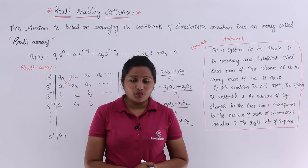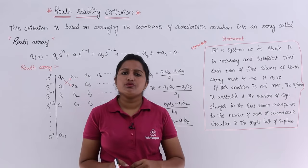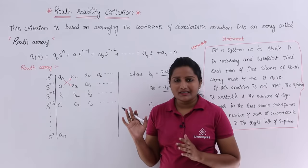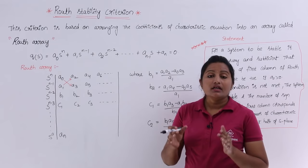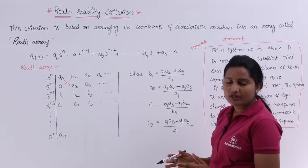In this video we are going to discuss Routh Stability Criterion, which is used to calculate the stability of a system. This criterion is based on arranging the coefficients of a characteristic equation in the form of an array, also called the Routh array.